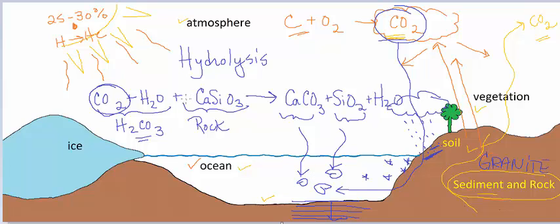So in summary, the slow weathering of granite and other silicate rocks on Earth's continental crust is the main way that CO2 is pulled out of the atmosphere over geologic time scales.